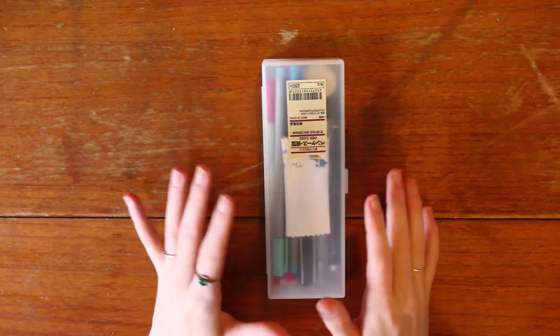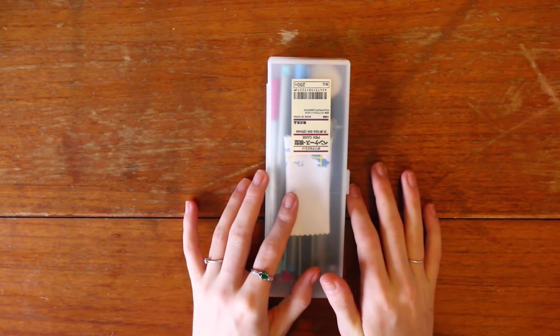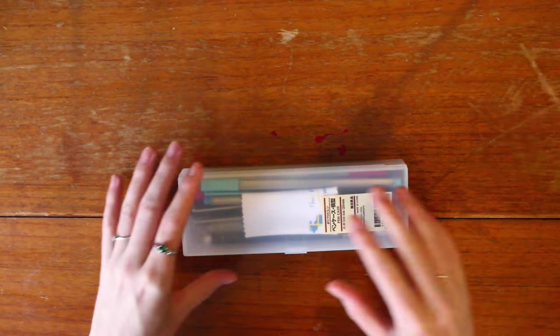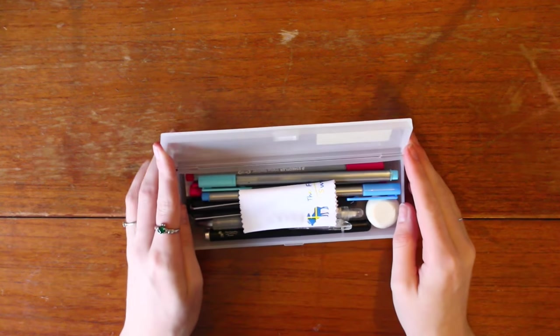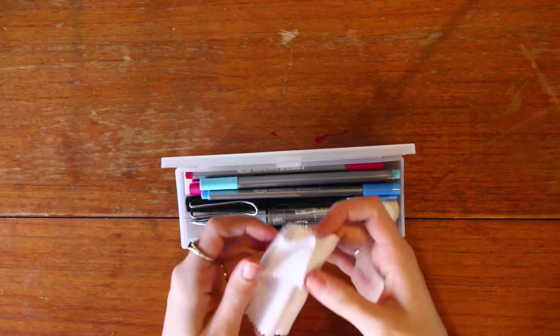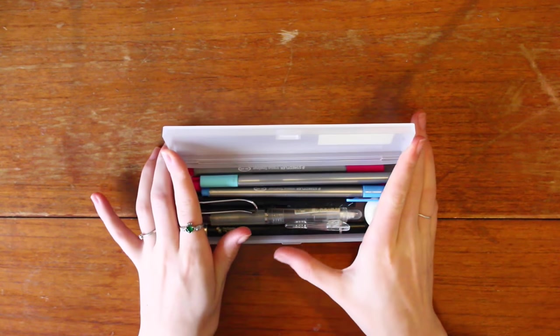So since this is my most essential pencil case we're going to start off with this one. This is just a Muji pencil case. I think it's the biggest one in the kind of just one compartment. I'm going to go through what is in it and the first thing is this little screen cleaner thing because I like to keep my phone screen clean.